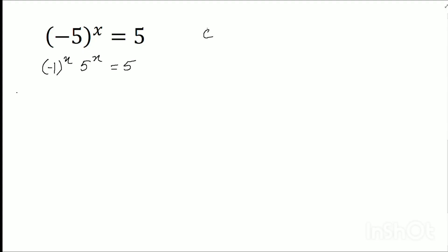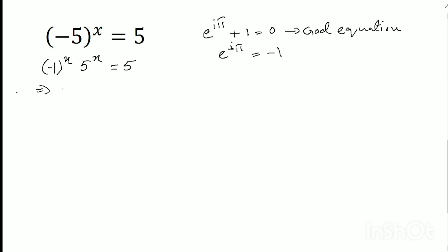Now, we know that e to the power i pi plus 1 equals to 0. This equation is called the God equation — a very popular equation. So e to the power i pi equals to minus 1.